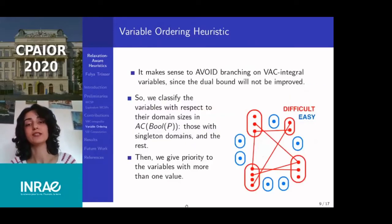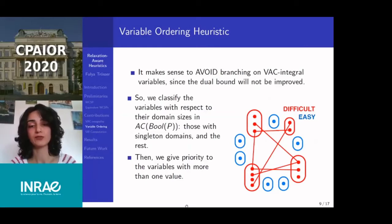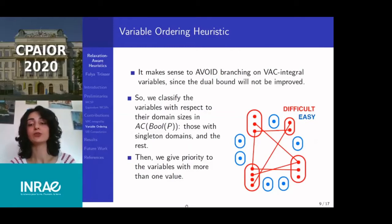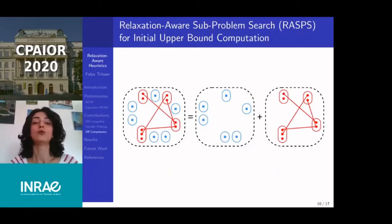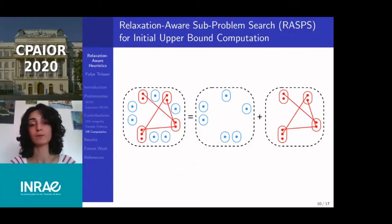Using WAC integrality, we implemented a variable ordering heuristic. It does not make sense to branch on WAC integral variables because assigning them to their unique value does not change the AC closure and yields a sub-problem where VAC cannot improve the lower bound. We classify variables as blue (WAC integral) and red (the rest), avoiding branching on blue variables and prioritizing red variables — similar to what LP solvers do with variables that are integral in the LP relaxation. We also implemented a heuristic to calculate a good upper bound at the root of the search tree before searching: we fix WAC integral variables to their unique value and solve the red sub-problem to quickly find high-quality solutions.